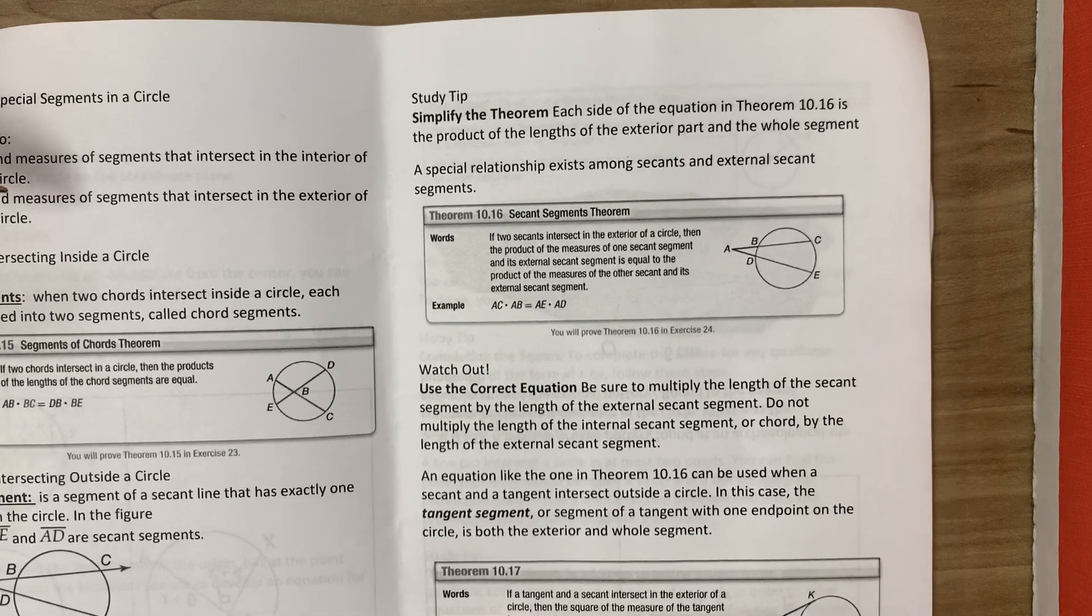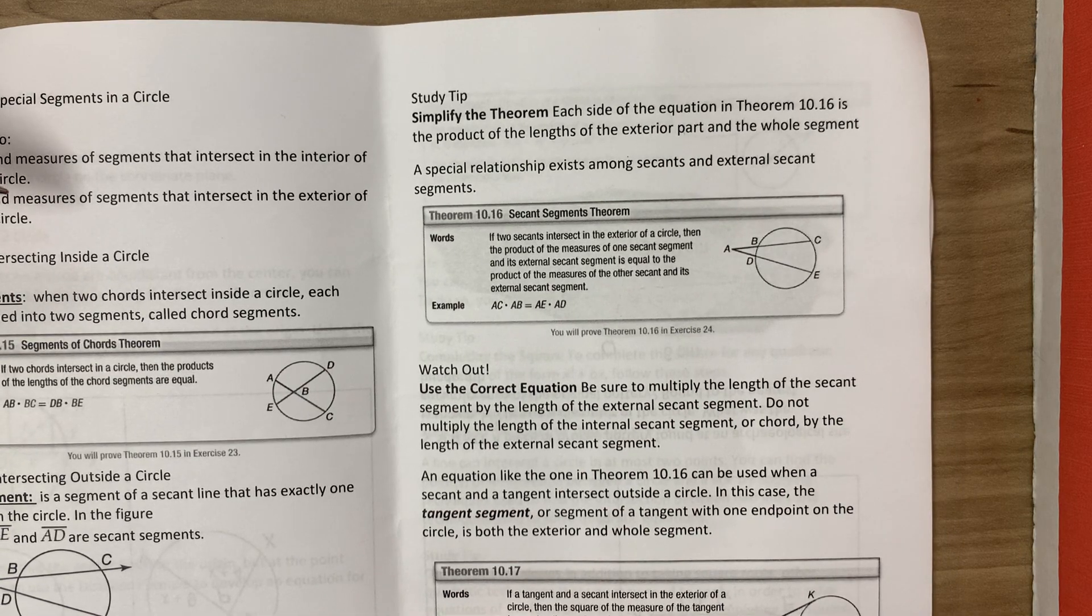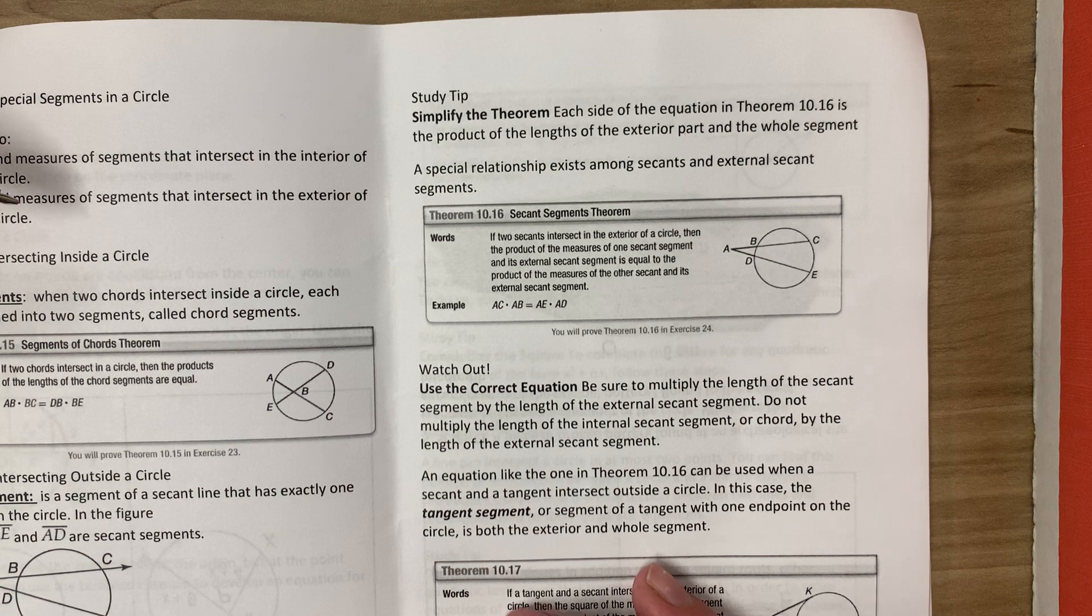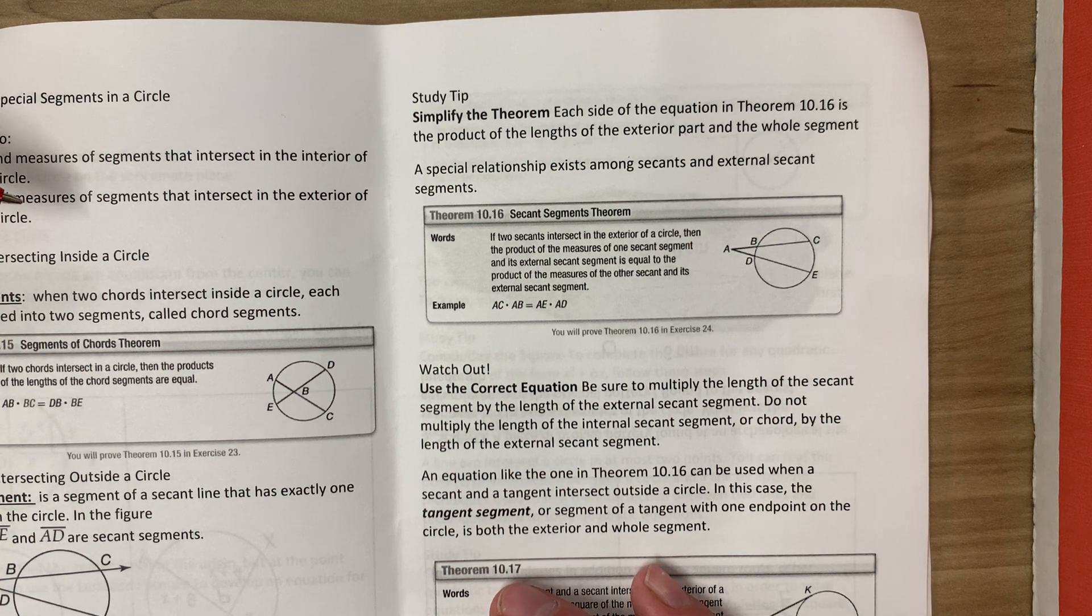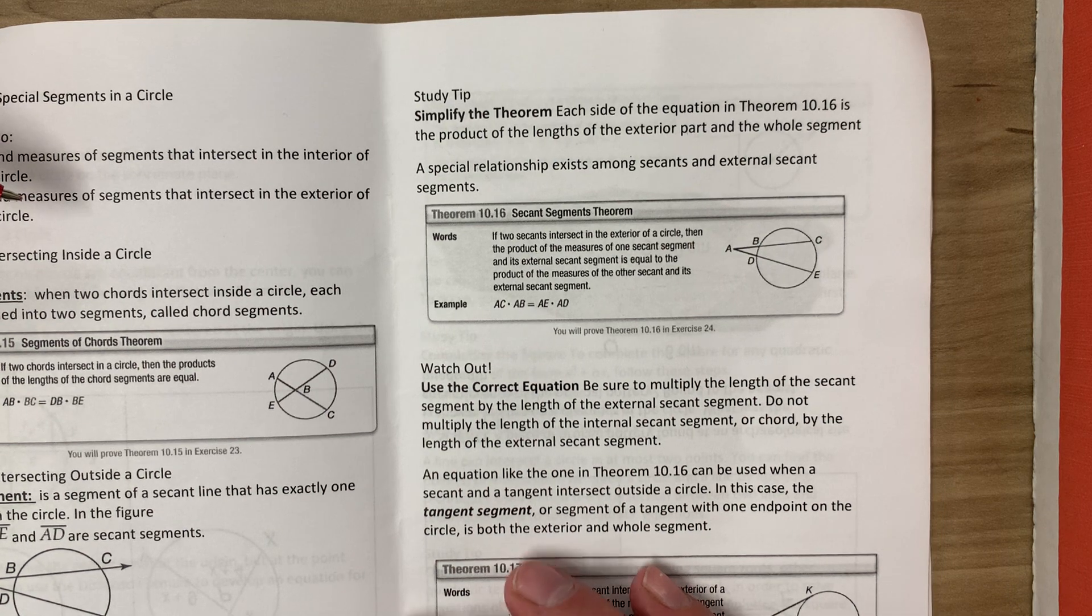Each side of the equation in Theorem 10.16 is the product of the lengths of the exterior part and the whole segment. A special relationship exists among secants and external secant segments.